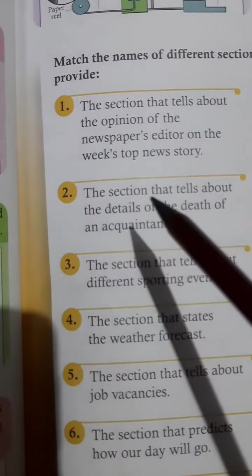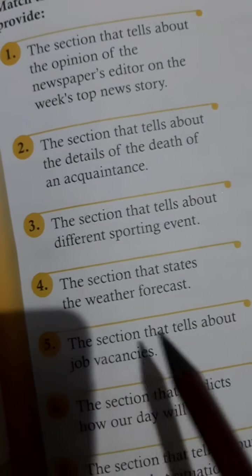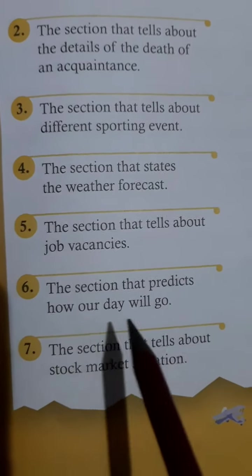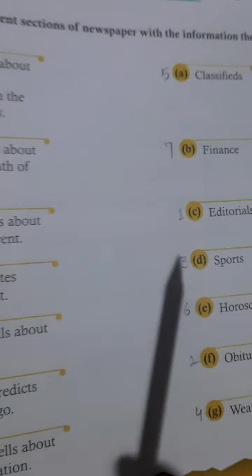Second is the section that tells about the details of the death of an acquaintance — that is obituaries. Third is the section that tells about different sporting events — that is sports. Fourth is the section that states the weather forecast — weather. Fifth is the section that tells about job vacancies — classified. Sixth is the section that predicts how your day will go — horoscope. Seventh and last is the section that tells about the stock market situation — finance.